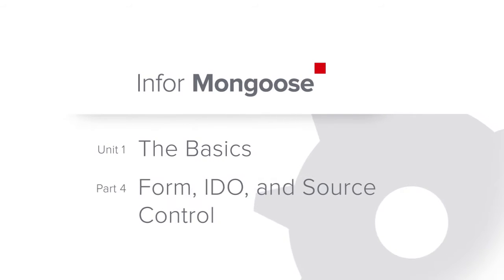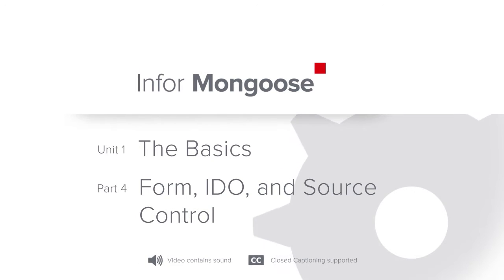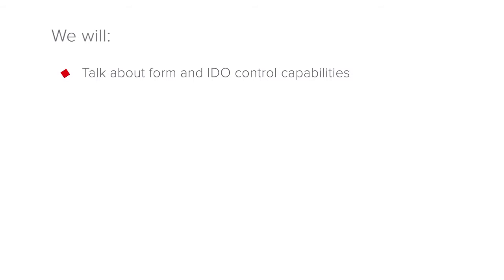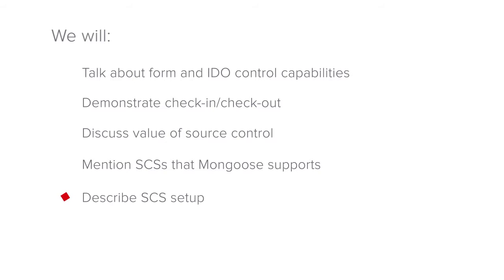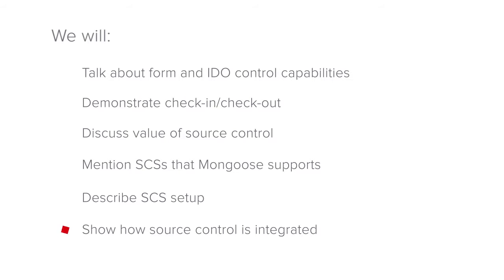Welcome to this tutorial in the Mongoose Foundation's training series. In this tutorial we will talk about how the Mongoose form control utility and the IDO editing forms provide multi-developer capabilities such as check-in, check-out and locking of forms and IDOs. We will demonstrate how to check-in and check-out both forms and IDOs, discuss the value of using a source control system when doing application development in Mongoose, mention the source control systems that Mongoose supports, and describe what must be done to set up a source control system to work with Mongoose. Finally, we will show how source control integrates with both form control and the IDO editing forms during development operations.